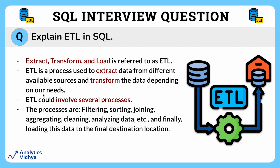Let's have a closer look at what each function means. Think of extract as scooping up data from different places, like getting ingredients from various stores to cook a meal. Then comes transform — imagine this step as sorting and chopping vegetables, marinating raw material, and doing all the necessary preparation before cooking.